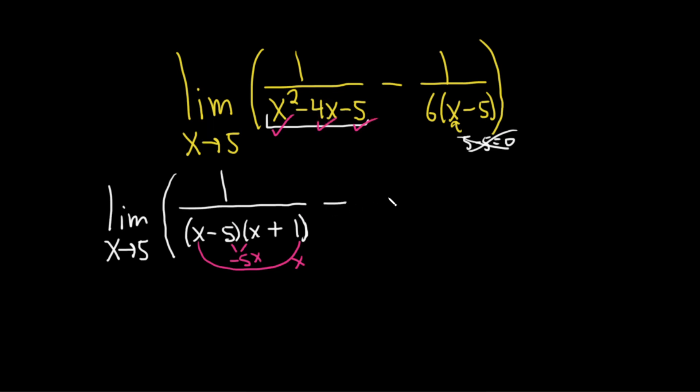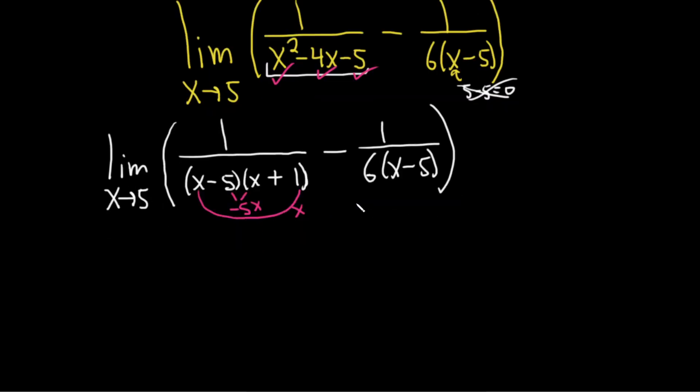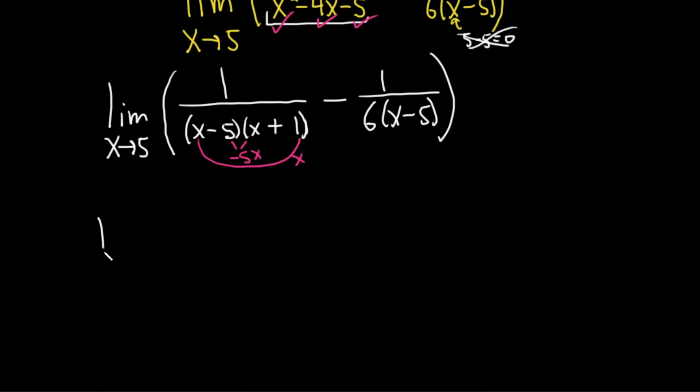Okay, this is minus 1 over 6 parentheses x minus 5. So let's go ahead and keep going. This is the limit as x approaches 5, and I'm going to show you a very powerful shortcut for doing the subtraction here. So there's a couple ways of doing it.